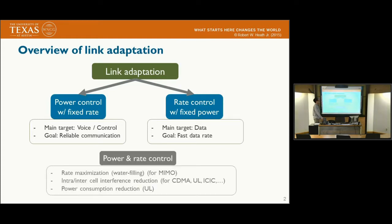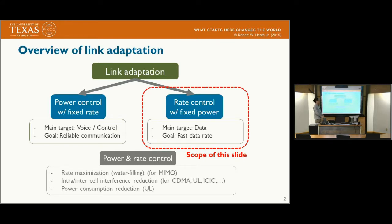Strictly speaking, there are other types — a combination of power and rate control. For example, well-known techniques from MIMO systems are considered as this power and rate control. Also, intra- and inter-cell interference reduction for CDMA, or ICIC — inter-cell interference coordination techniques — are also considered as power and rate control, as is the power consumption reduction technique from MIMO systems. But we focused on just the rate control with fixed power, so the scope of this talk is rate control techniques.